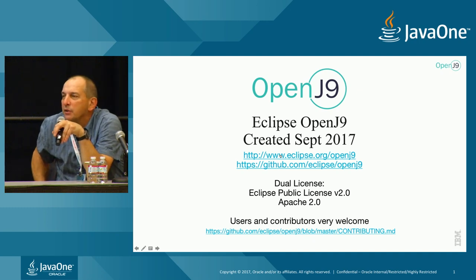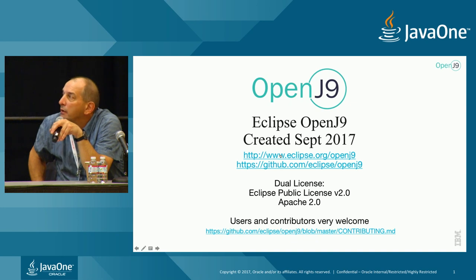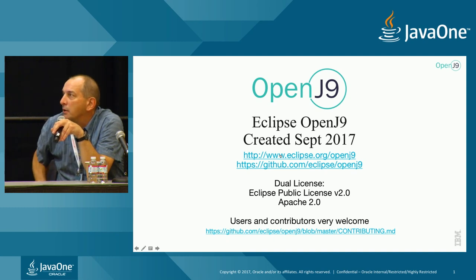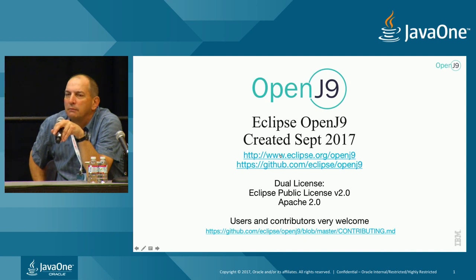What about WebSphere micro edition and Java ME? J9 has a long history — it started out as an embedded JVM. The original libraries were 300K and the VM would fit in 512K. But there is no ME version going forward because ME is being deprecated by Oracle — they want you to use modularity to get your smaller runtimes. So there is no real ME anymore.